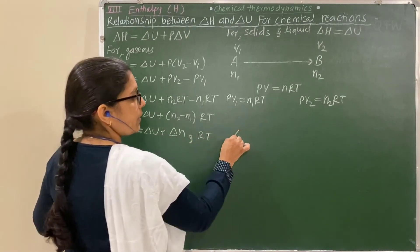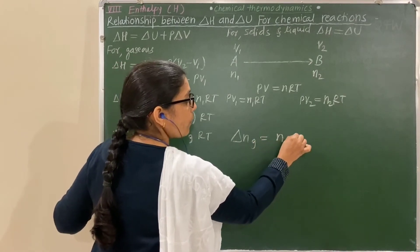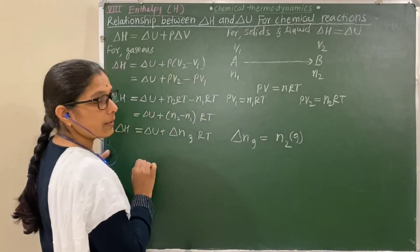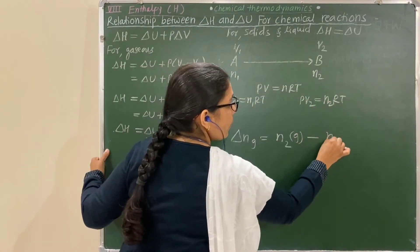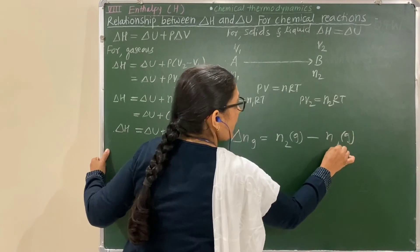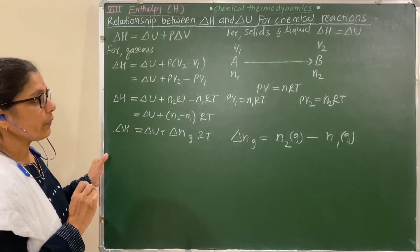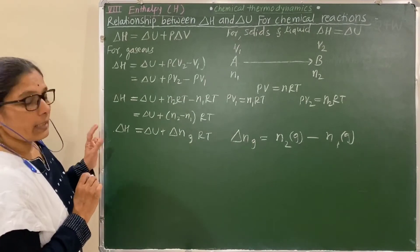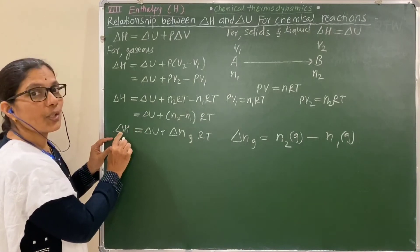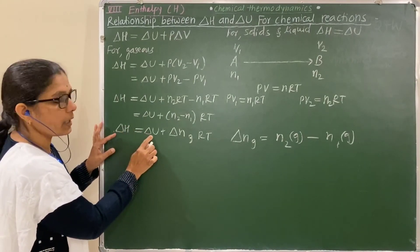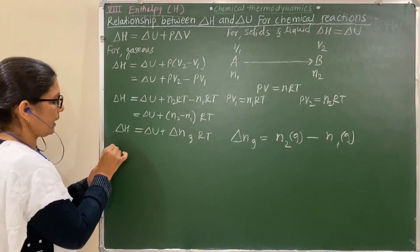ΔNg = (number of moles of gaseous products) − (number of moles of gaseous reactants). Now let us see the relationship between ΔH and ΔU under different conditions based on the value of ΔNg.